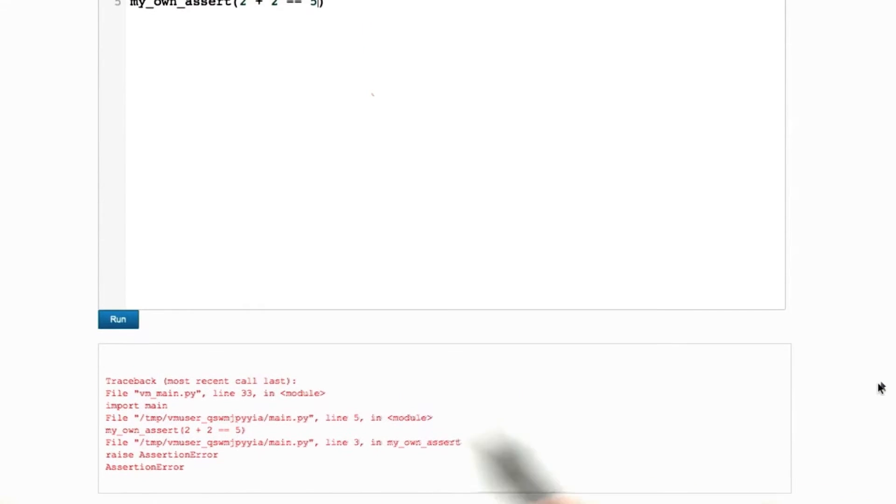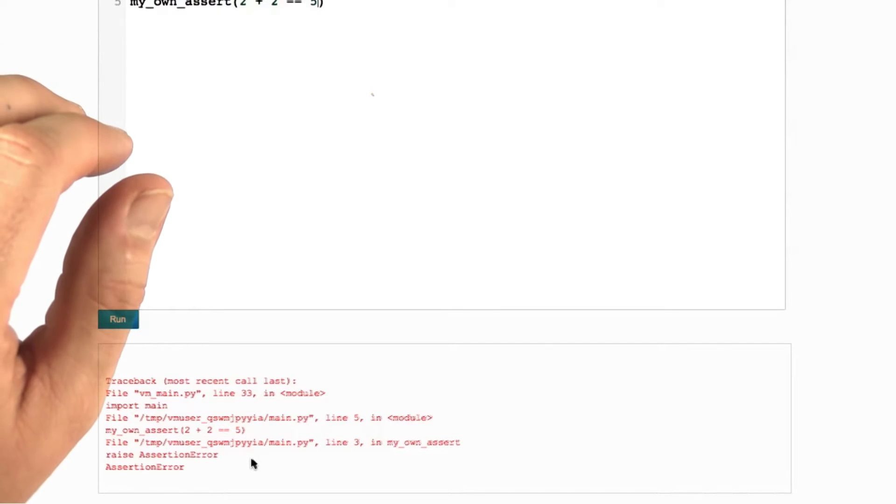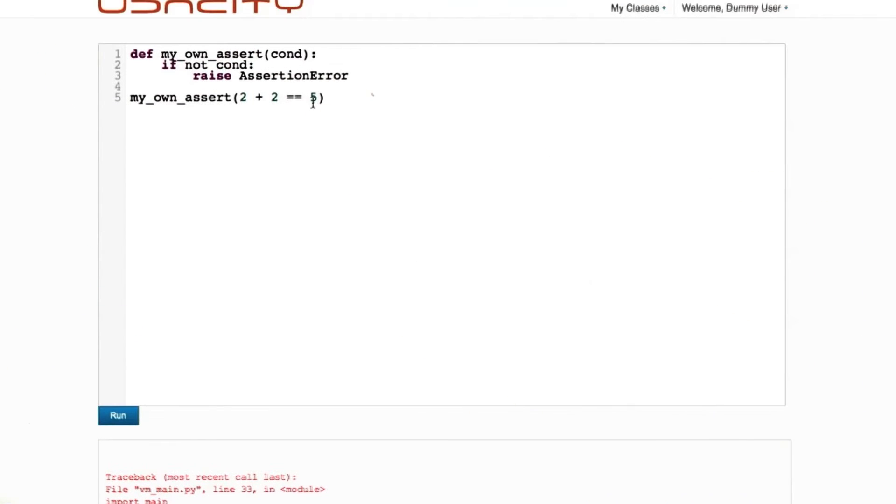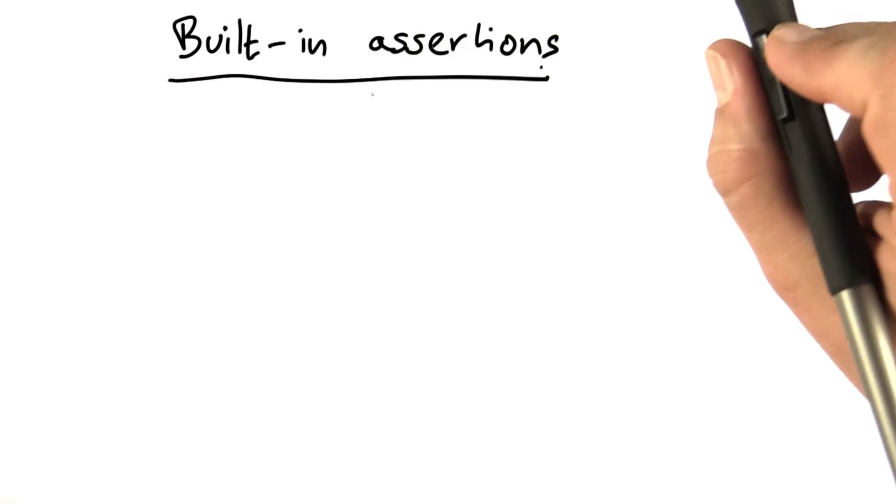However, if we assume that 2 plus 2 equals 5, we can run this and we get an assertion error that's being raised. This gives us almost the same functionality as the built-in assertions.